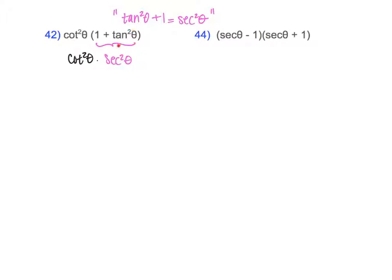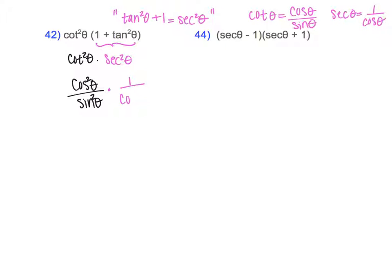Now I'm multiplying these two. Cotangent is cosine over sine, and since it's squared, the top gets cosine squared and the sine gets squared. Secant's identity is 1 over cosine theta, and since secant is squared, that's 1 over cosine squared — but 1 squared is just 1. So I multiply: cosines cancel diagonally, leaving 1 over sine squared. But 1 over sine squared is cosecant, and since it's squared, this is cosecant squared. That's the simplified form.